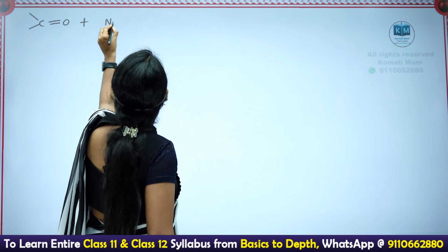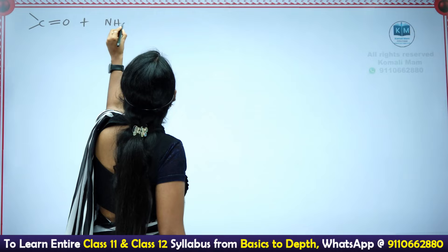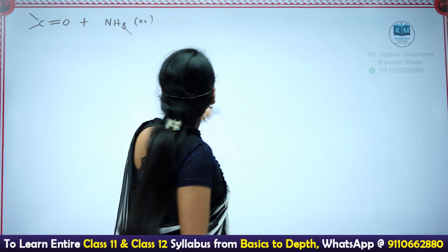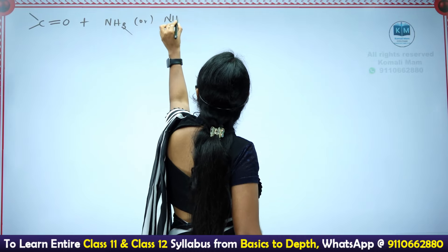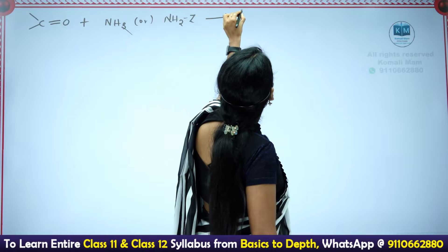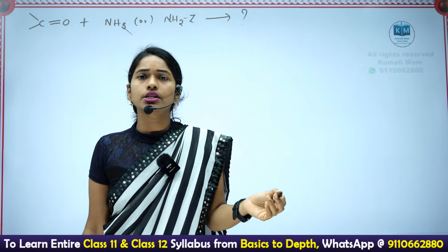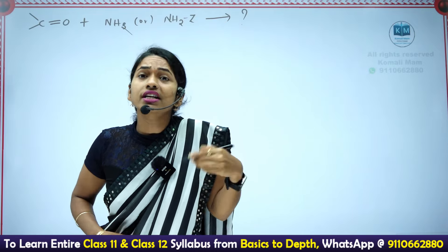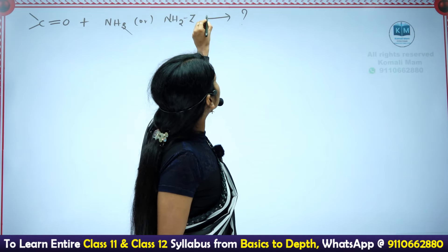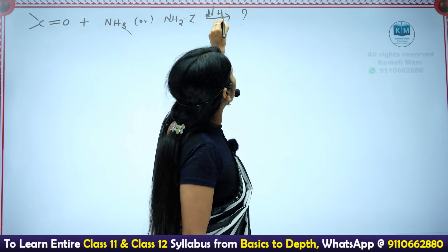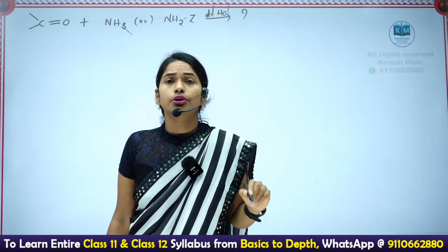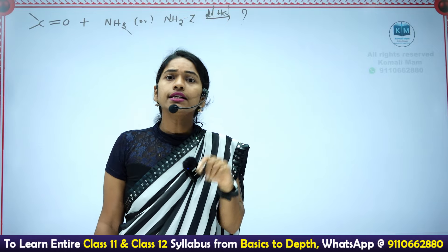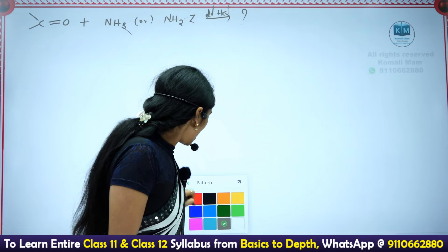Ammonia is NH3. An ammonia derivative means you remove one hydrogen from NH3 and put one Z group in its place. We'll look at what the products are, what the conditions are, and the different types of ammonia derivatives. The reagent used is dilute HCl and the pH is 4 to 5. We'll discuss why dilute HCl specifically - why not concentrated HCl or a basic medium - step by step.